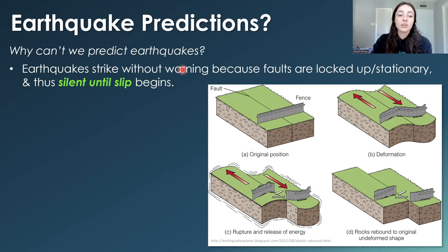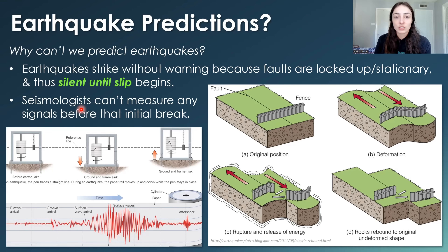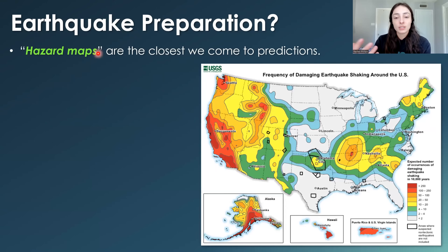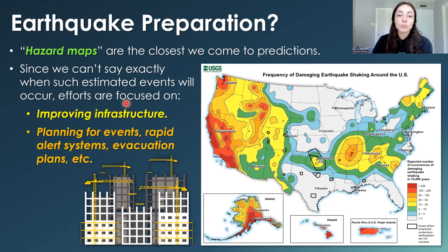So why can't we predict earthquakes? Faults are locked up and stationary — and therefore silent — until slip begins, meaning seismologists cannot measure any signals before the earthquake starts. Once it begins, it's already going so quickly that we can only send out early warnings providing seconds to tens of seconds of notice. Hazard maps are the closest we come to predictions. Since we can't say exactly when events will occur, earthquake scientists typically focus on improving infrastructure, rapid alert systems, and evacuation plans.